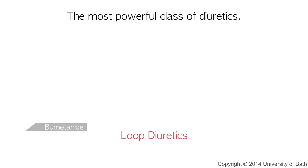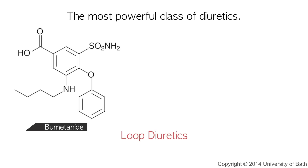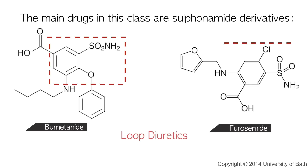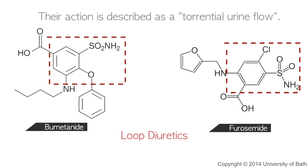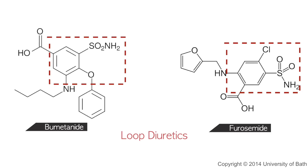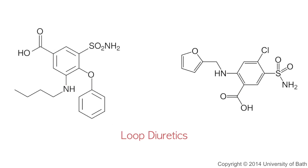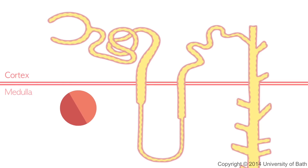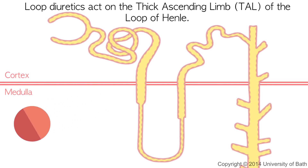Loop diuretics are the most powerful class of diuretics. The main drugs in this class are sulfonamide derivatives. Loop diuretics' action is described as a torrential urine flow. They act on the thick ascending limb of the loop of Henle.